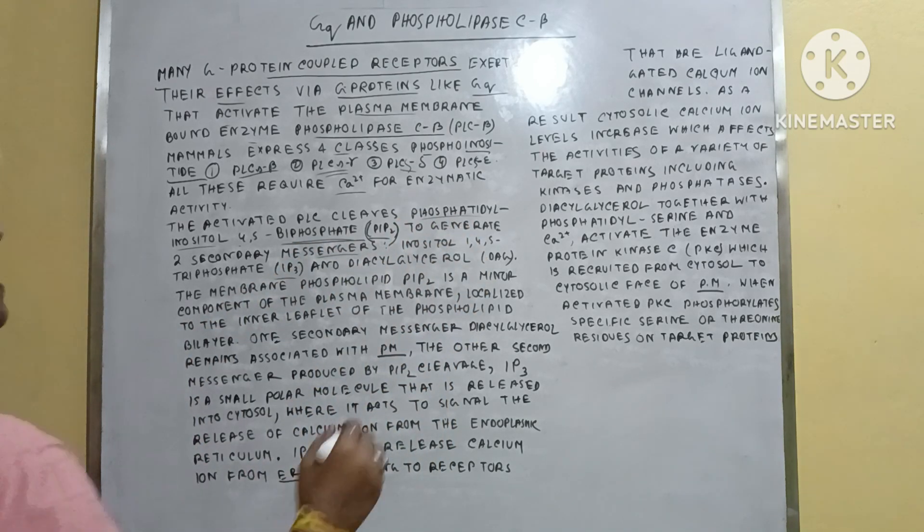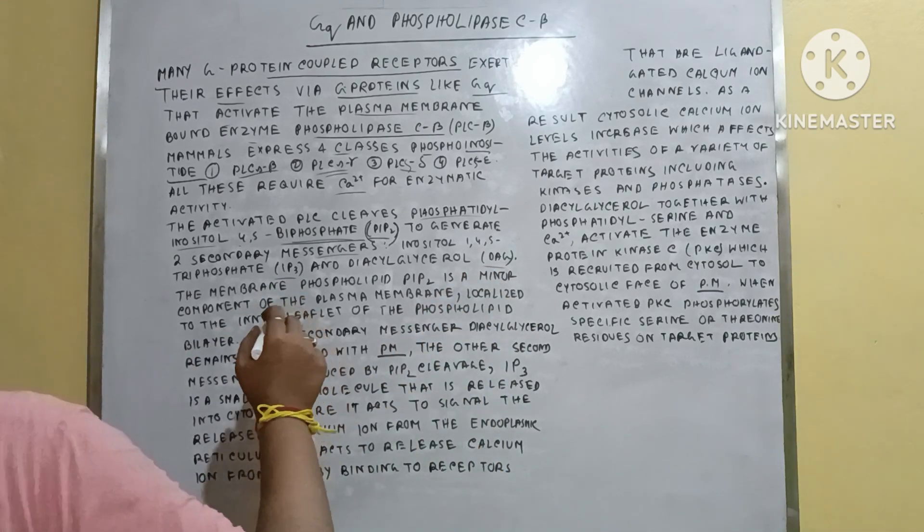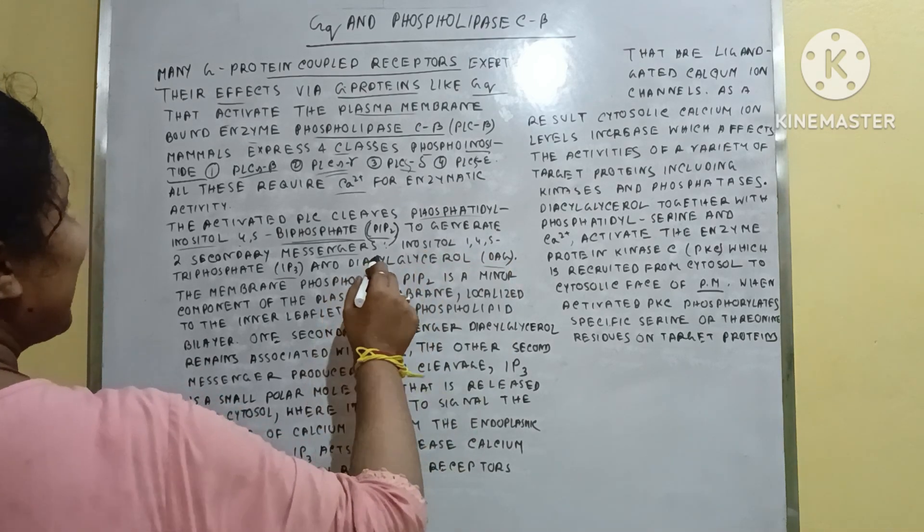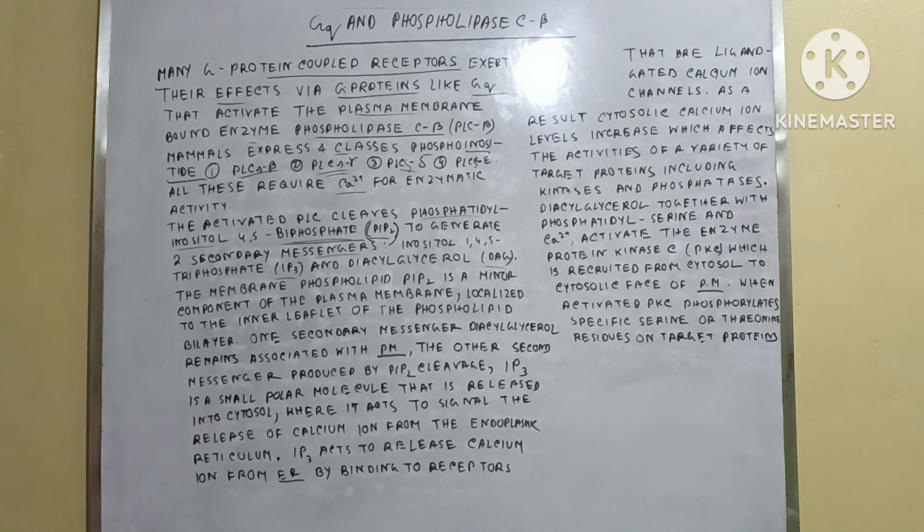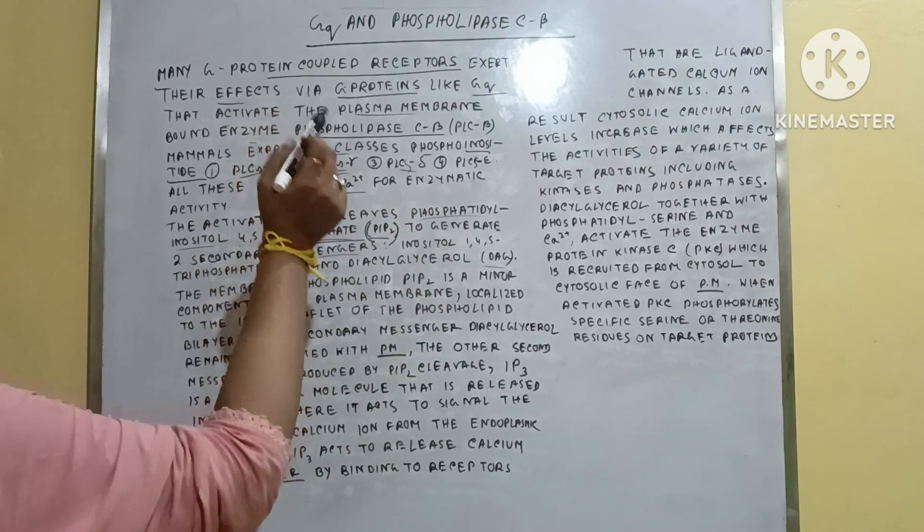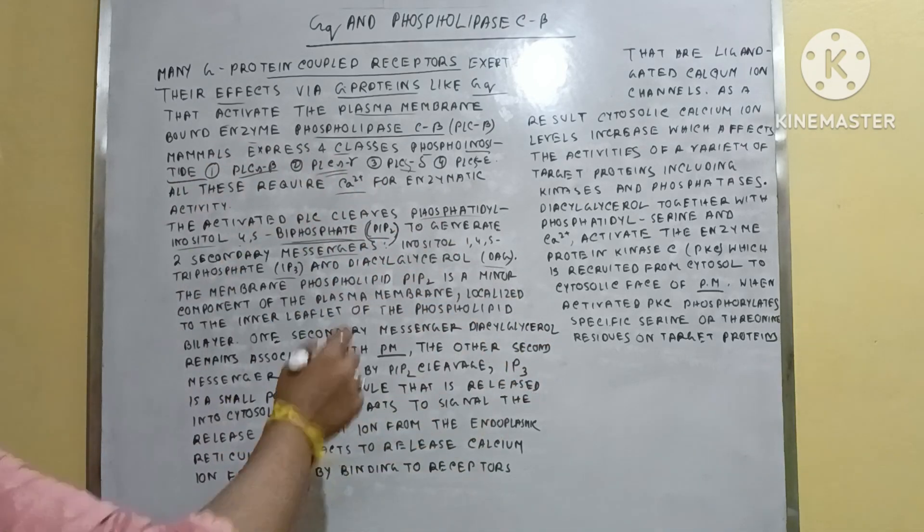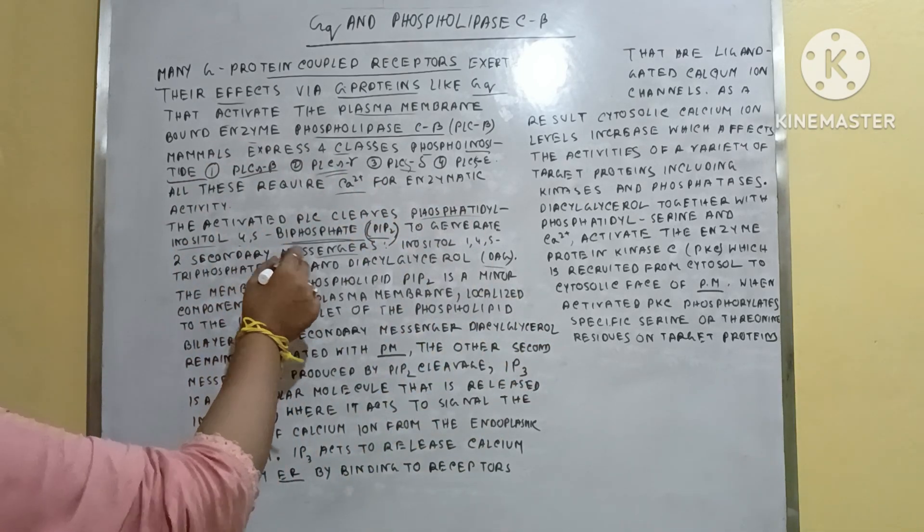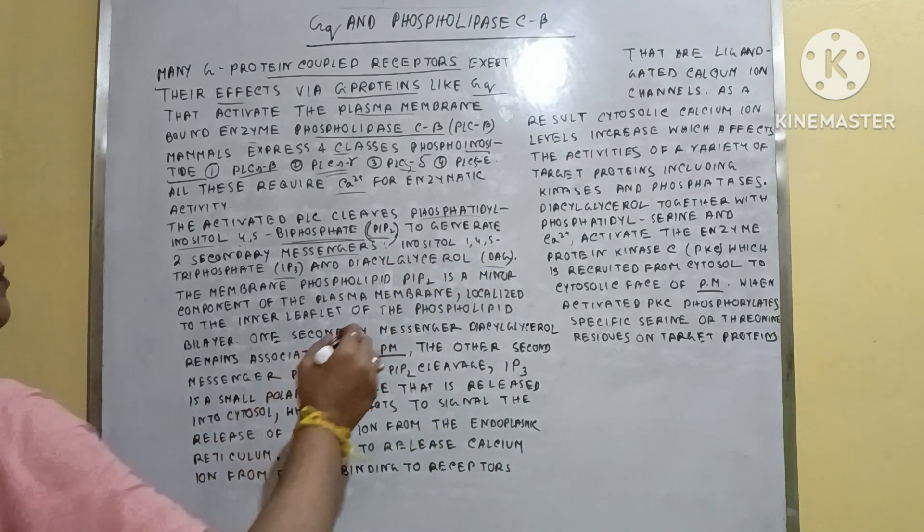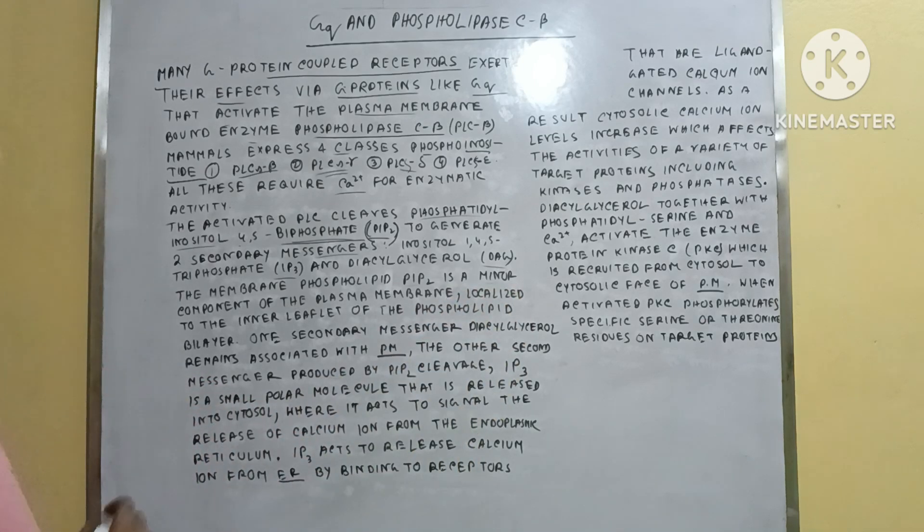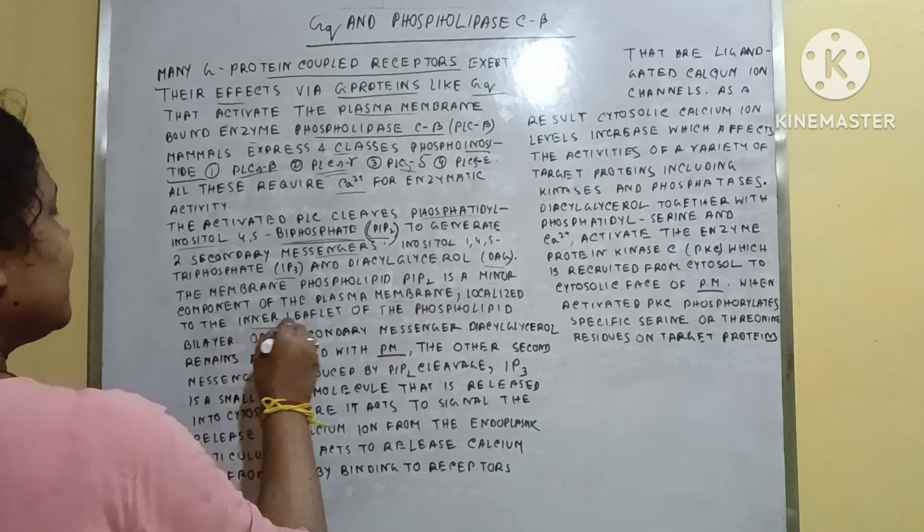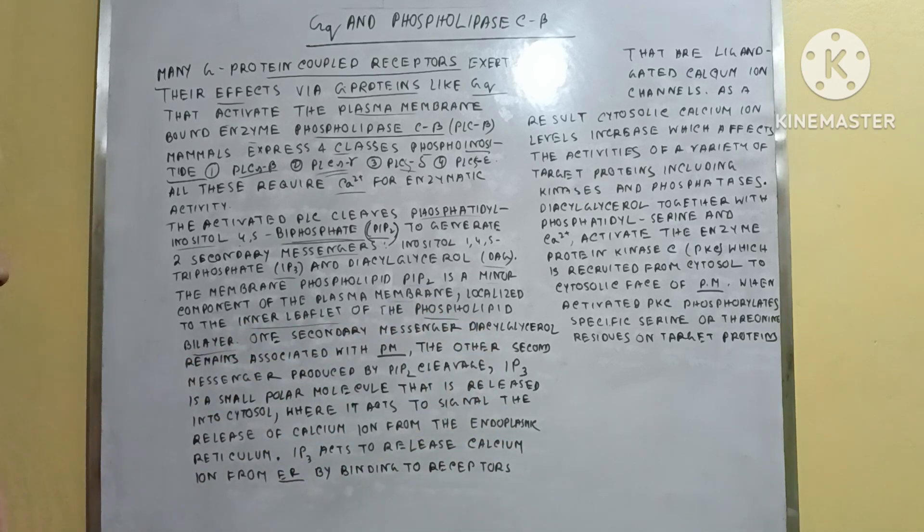One is IP3 and another is DAG. IP3 is inositol-1,4,5-triphosphate and DAG means diacylglycerol. PIP2 (phosphatidylinositol-4,5-bisphosphate) cleaves to produce inositol-1,4,5-triphosphate (IP3) and diacylglycerol (DAG). Phospholipid PIP2 is a minor component of the plasma membrane and is present in the inner leaflet of the phospholipid bilayer.